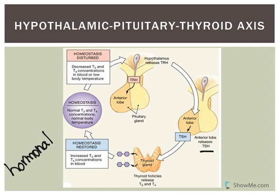You will not be able to make T3 or T4 without TSH. TSH regulates the uptake of iodine and regulates all the enzymes involved in thyroid hormone synthesis. TSH also stimulates growth of the thyroid gland because it's referred to as a trophic hormone. This is important when we look at the effects of someone with over-secretion of TSH — they're going to have hyperthyroidism and an enlarged thyroid gland, referred to as a goiter.